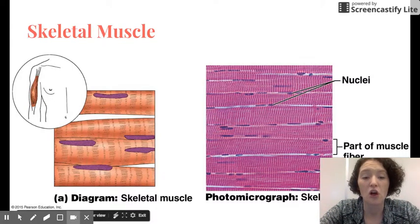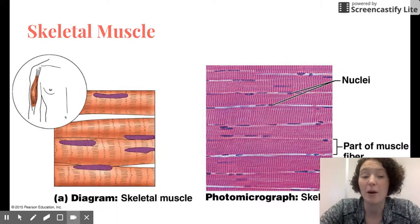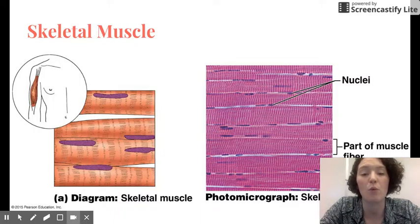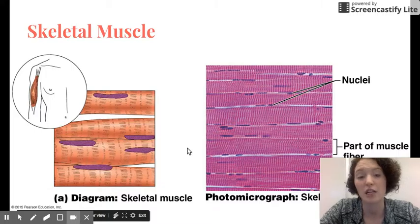The cells are long and cylindrical. They're multinucleate. You can see that they have multiple nuclei here, and they have obvious striations, which are these lines through the cells. When we talk about muscle function in the muscular system, we'll talk about what those striations are, but you should be able to recognize this picture as being of skeletal muscle.